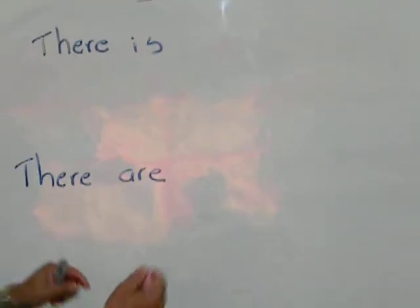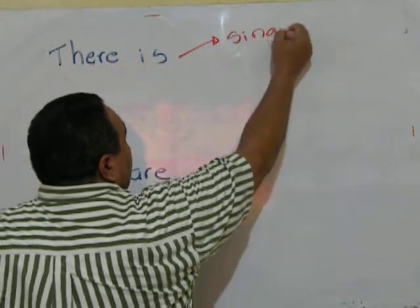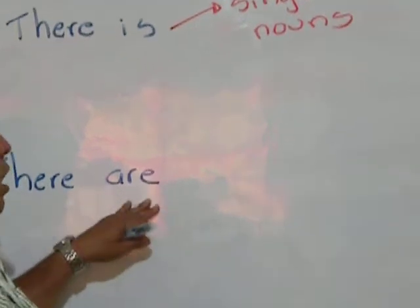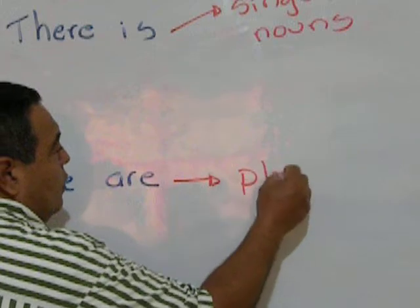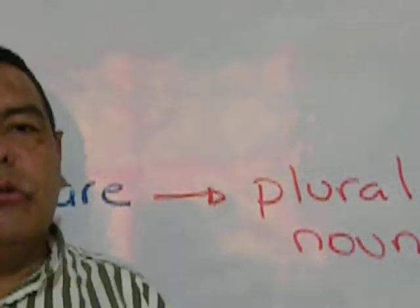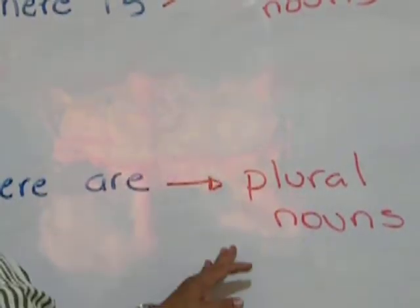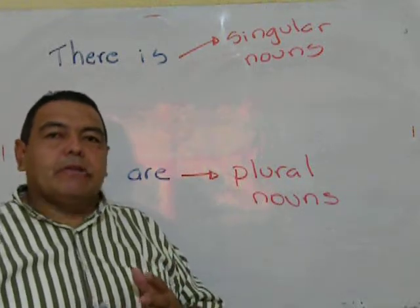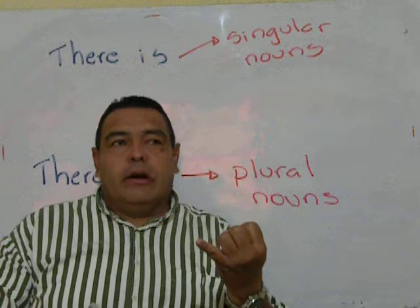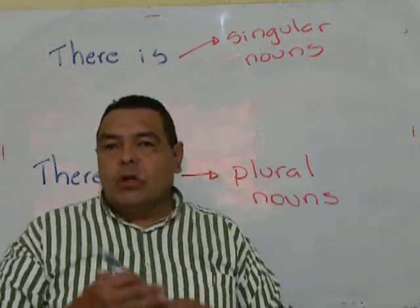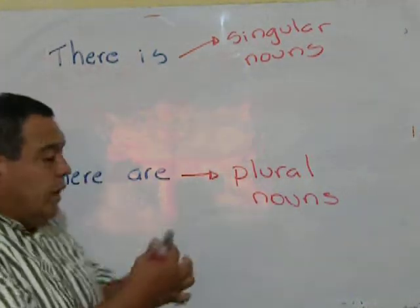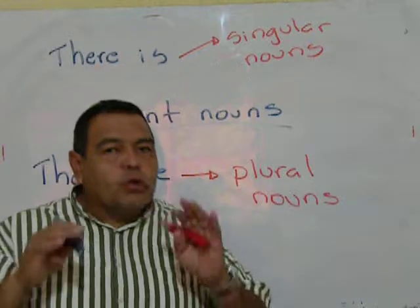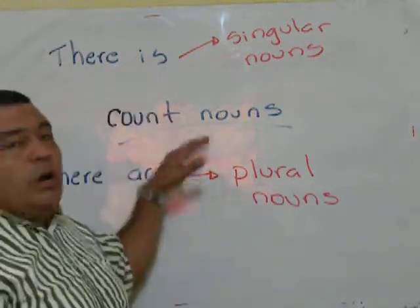What is the difference? The difference is that there is, is for singular nouns. And there are, of course, is going to be for plural nouns. Now, I'm talking about count nouns. What are count nouns? Things, people, or animals that can be counted. One car, two apples, ten oranges. Those are count nouns. And we are going to work today with only count nouns for today. Our next lesson is going to be for non-count nouns.